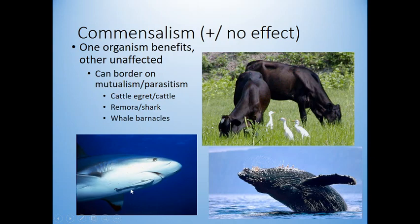Another example is remoras and sharks. The remora attaches to the bottom of a shark and grabs little pieces of food that get ripped off when the shark eats — food the shark wasn't going to eat anyway. The shark doesn't really care. Similarly, whale barnacles: the whale doesn't care about the barnacles living on it, and unless the whale gets totally covered in them, it's not a problem.